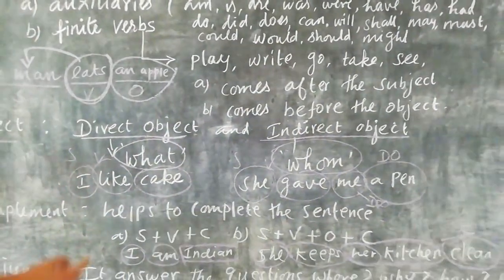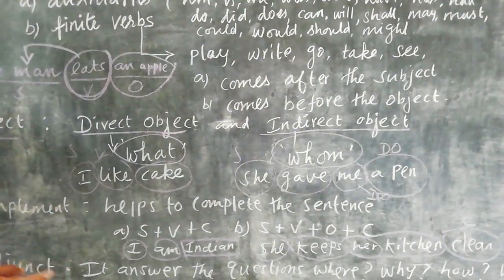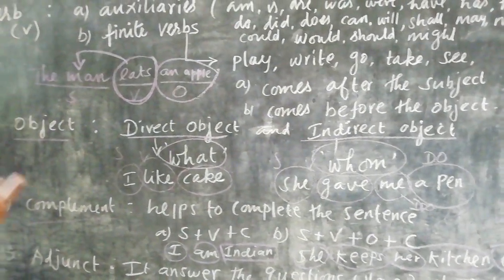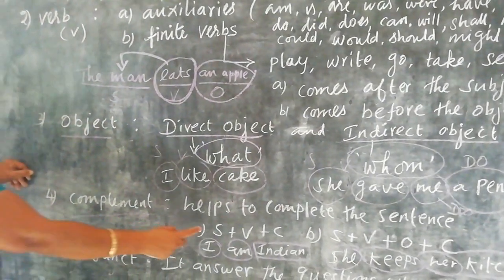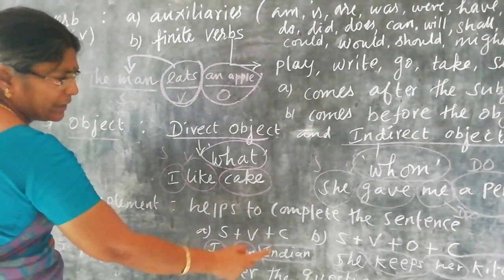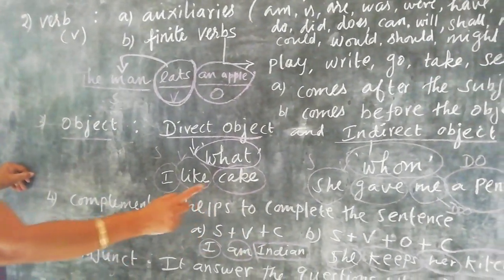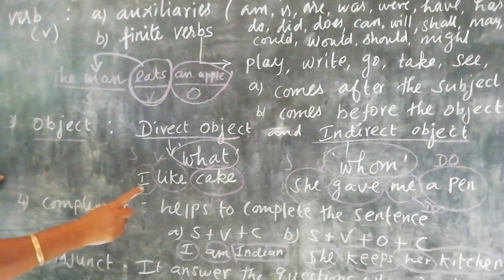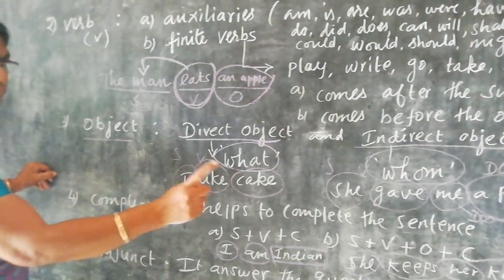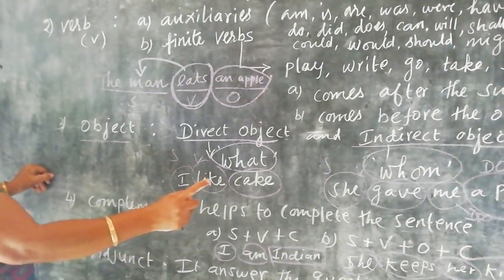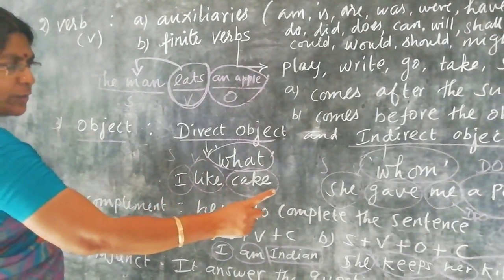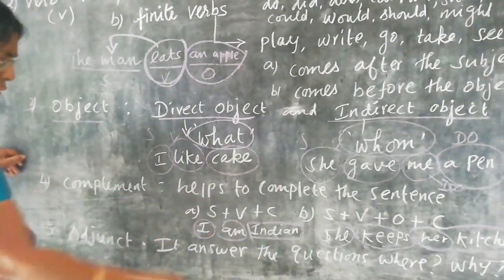So, in the complement, we use two patterns: one is the SVC pattern, and another one is the SVOC pattern — that means subject, verb, object, and complement.